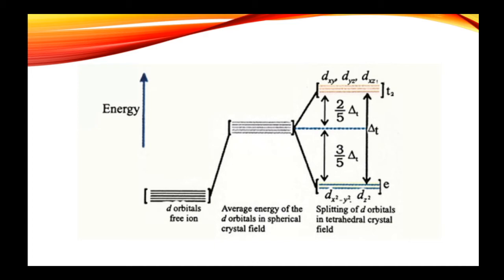In tetrahedral complexes this is exactly opposite to octahedral complexes. When ligands approach the metal ion in tetrahedral complexes, the energy of the dxy, dyz, and dzx orbitals increases while the energy of the dx²-y² and dz² orbitals decreases. The triplet state is called t2 whereas the doublet state is called e. Here 'g' is not used — unlike octahedral complexes — because there is no center of inversion in tetrahedral complexes.